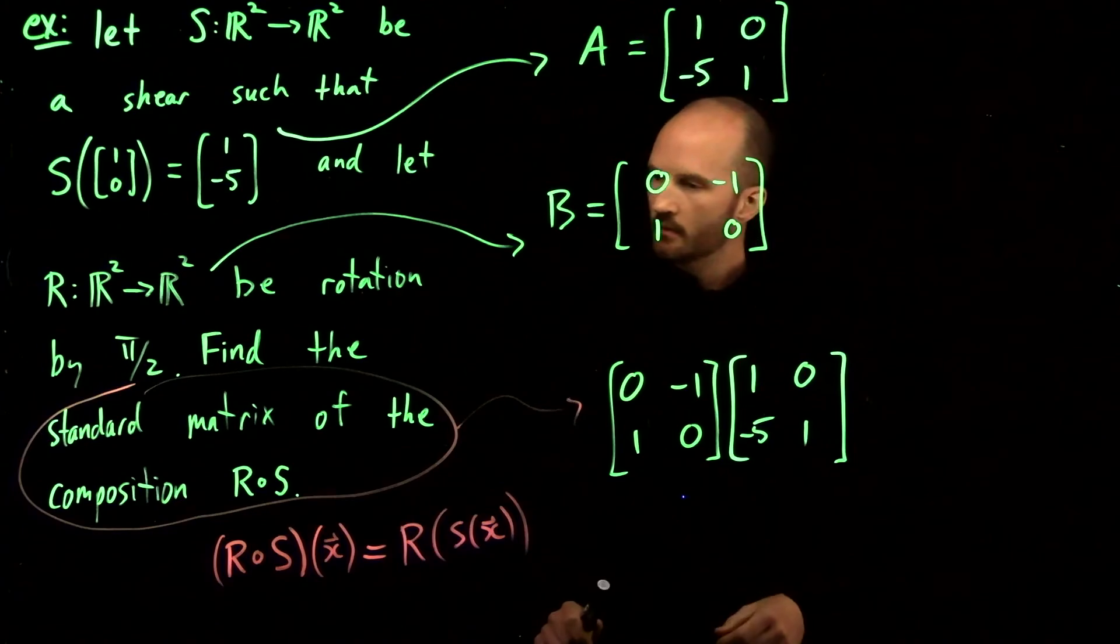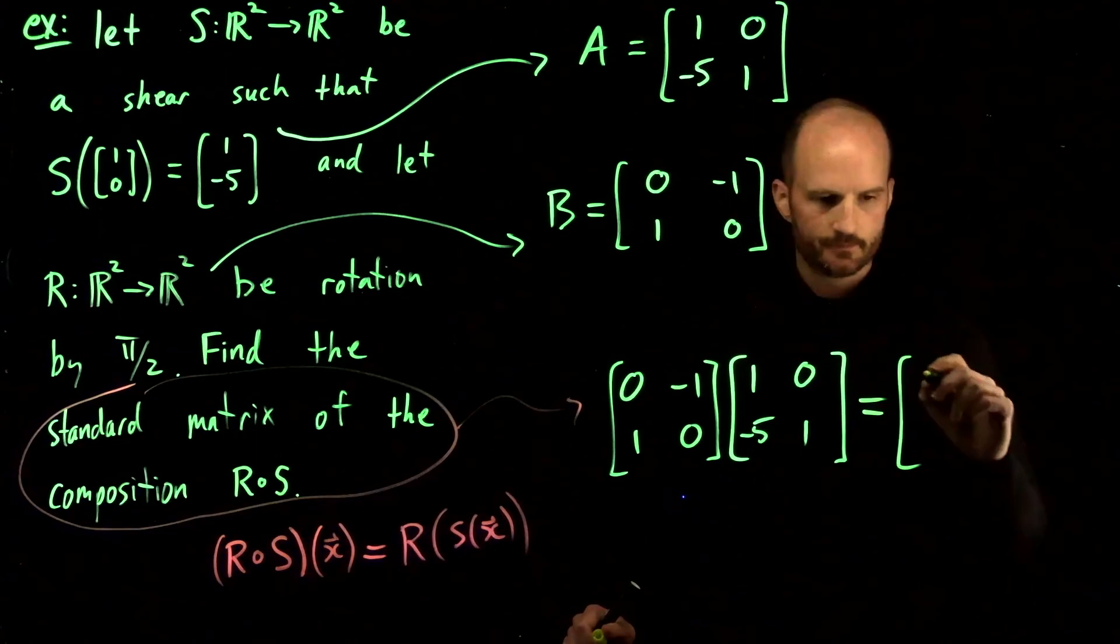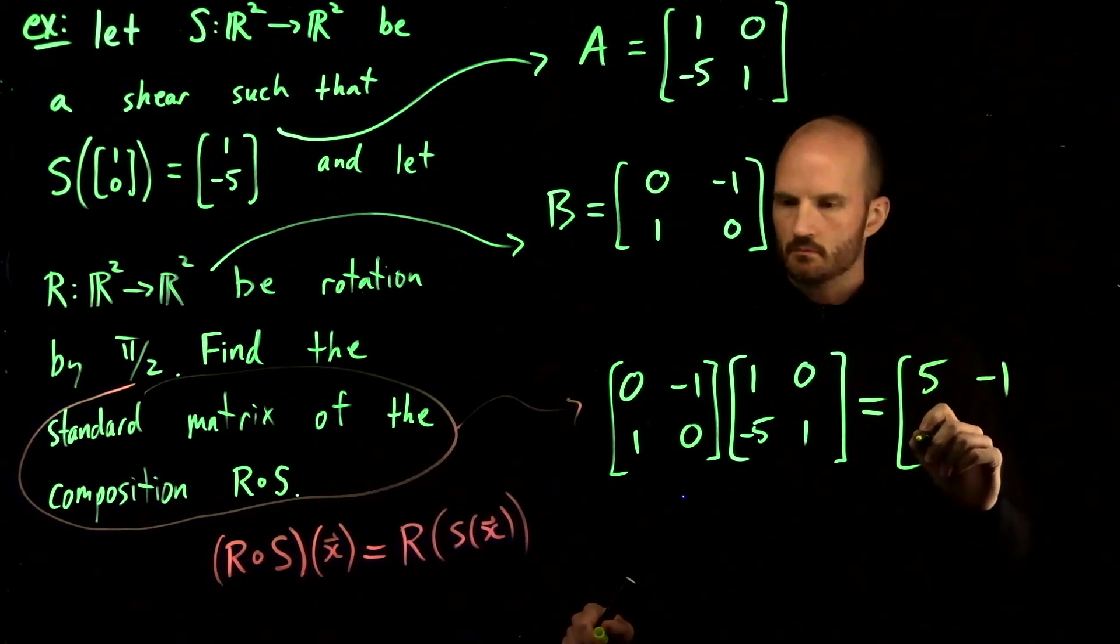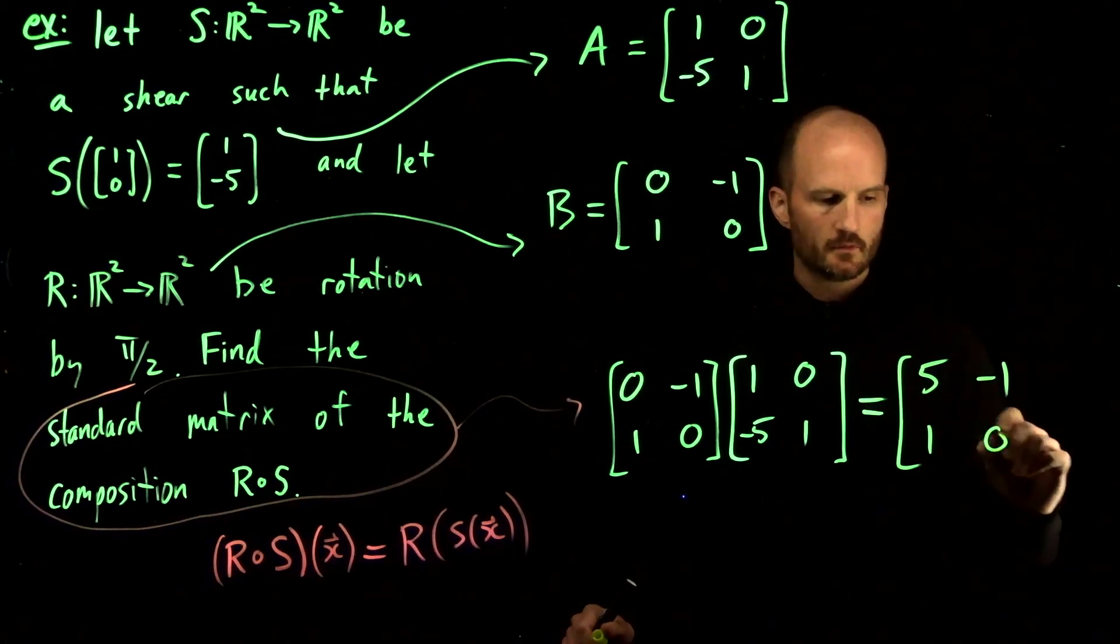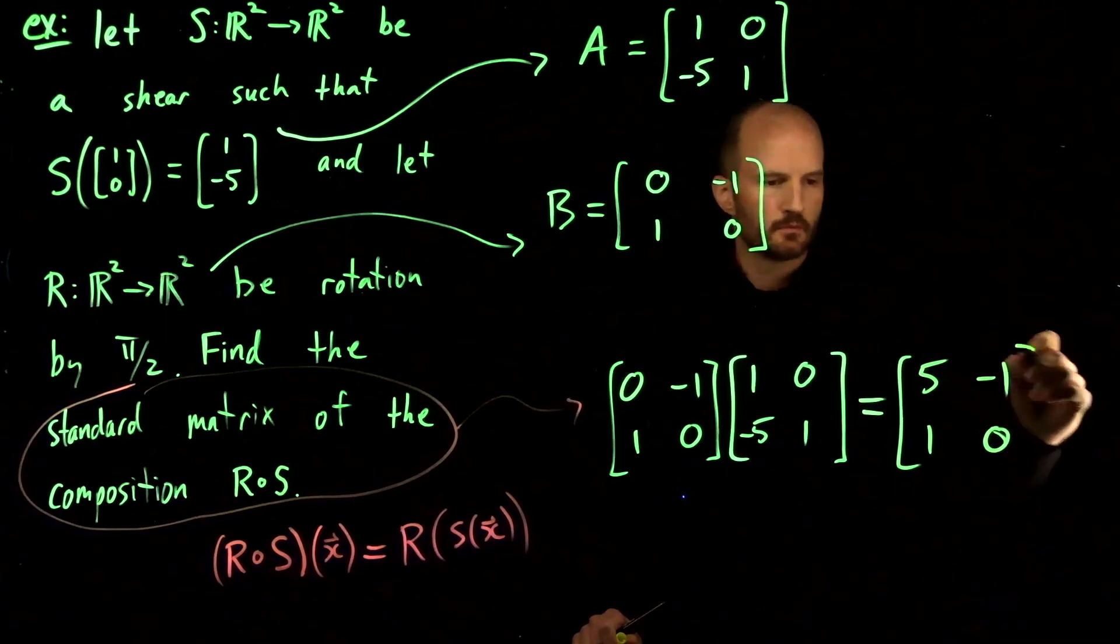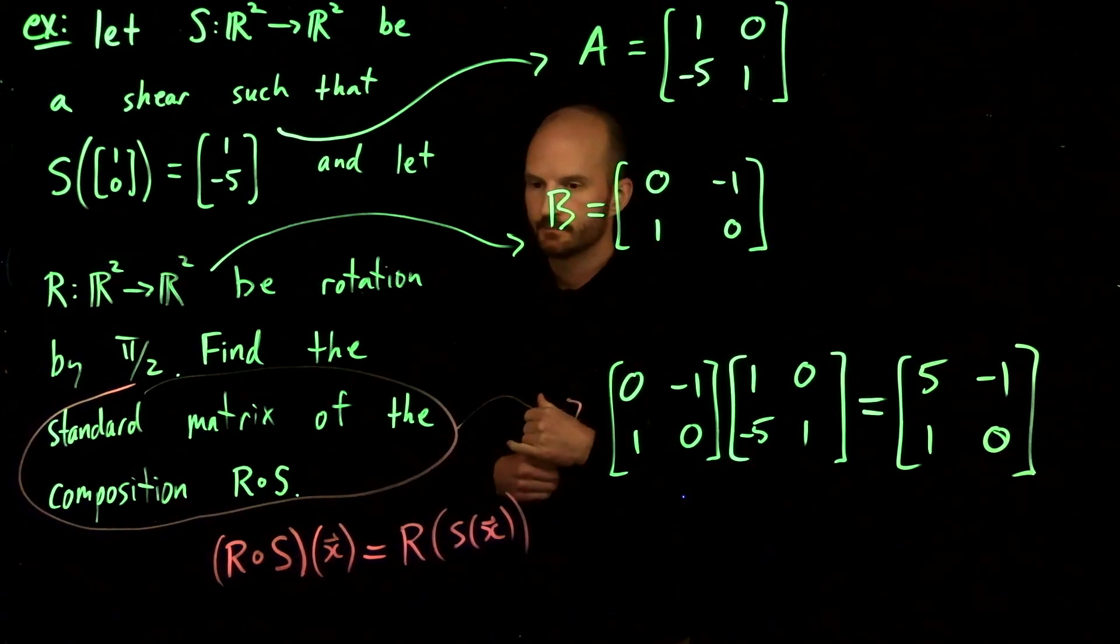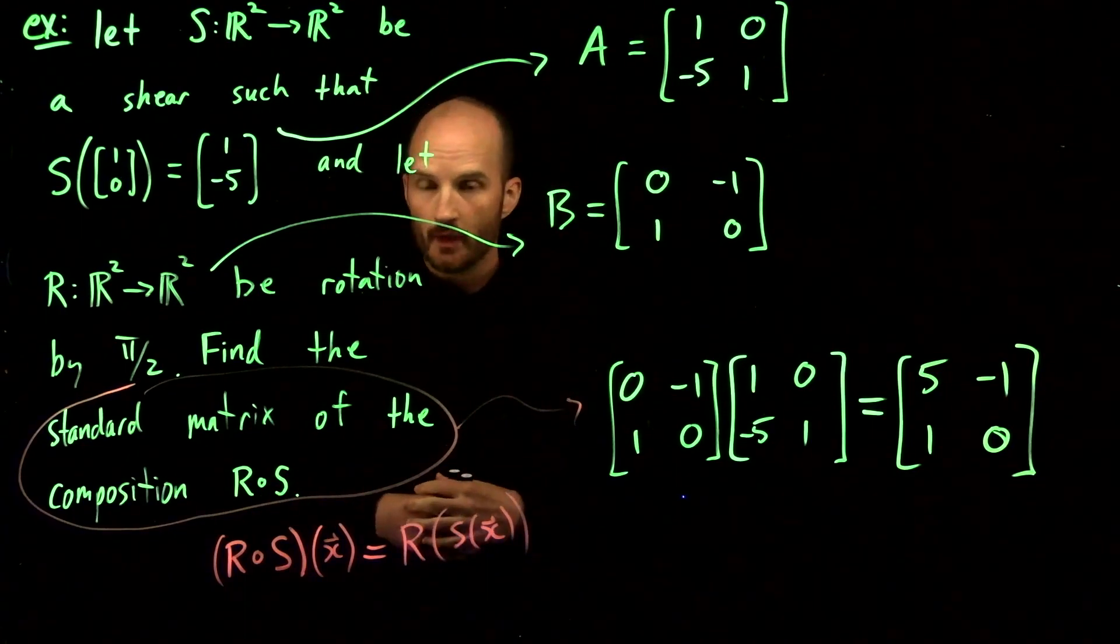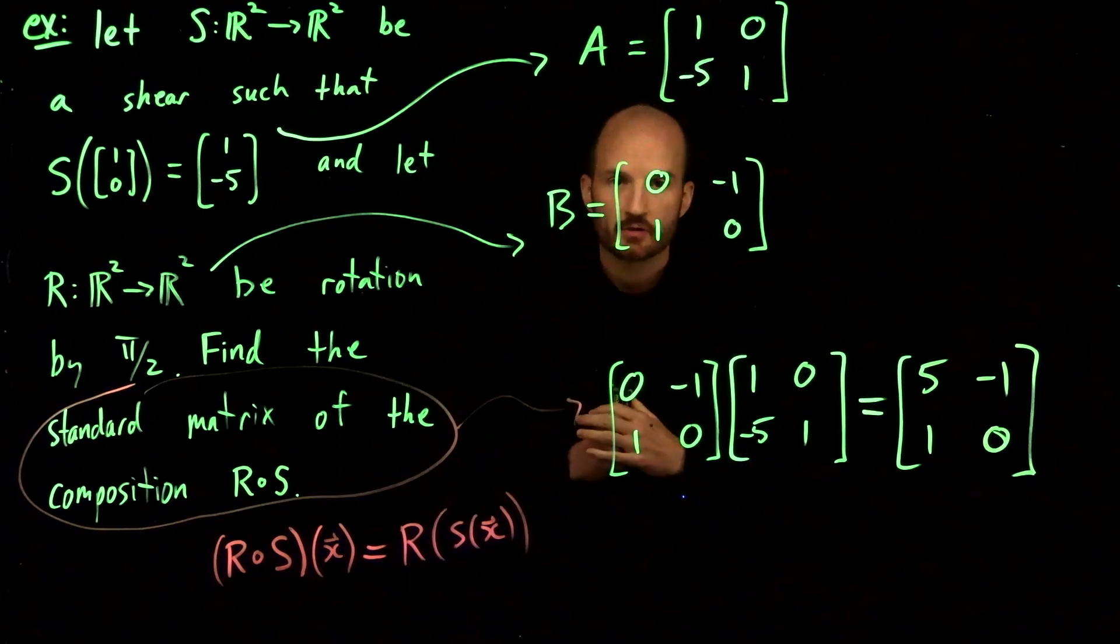Here's my standard matrix for the composition. I work it out and get: 5, -1, 1, and 0. This composition of linear transformations can be done in more than one way. What I've shown you here is how to do it using matrix multiplication.